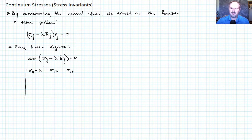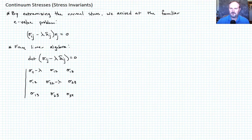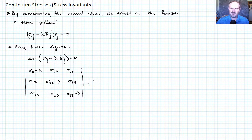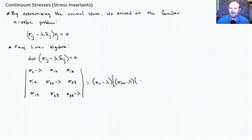We're writing out the terms of this quantity in parentheses. Then we take the determinant and remember it equals zero. There are multiple ways to take the determinant; I'm going to go along the top row. The first term is sigma_11 minus lambda, and then we multiply that times the two-by-two submatrix determinant: sigma_22 minus lambda times sigma_33 minus lambda minus sigma_23 squared.